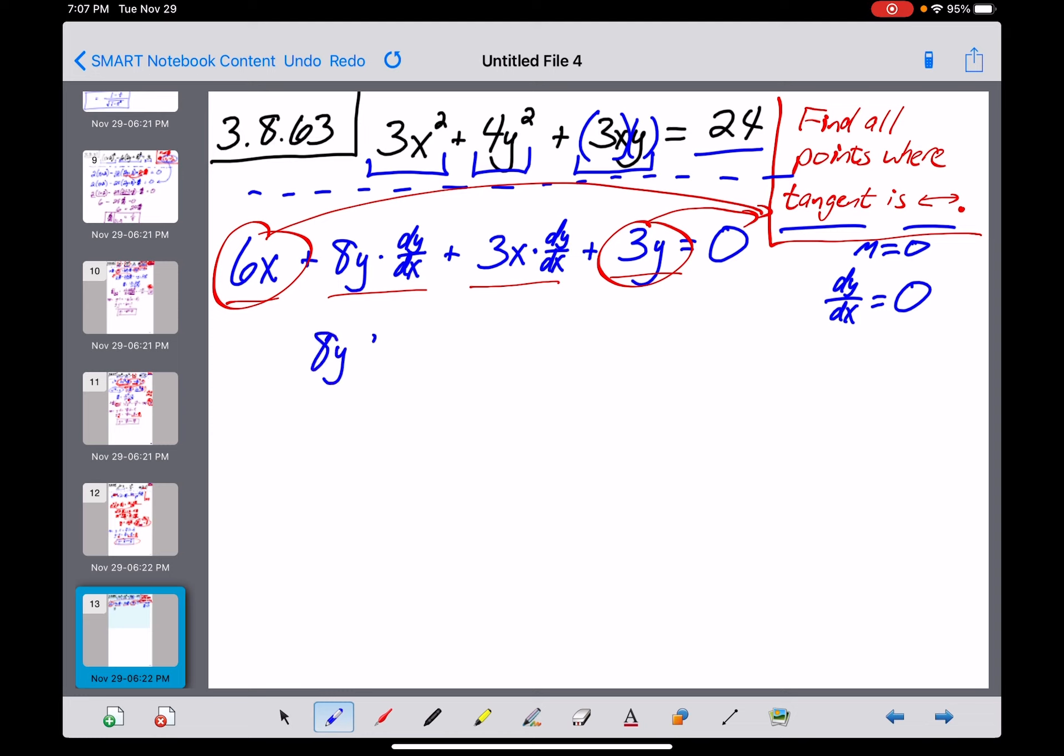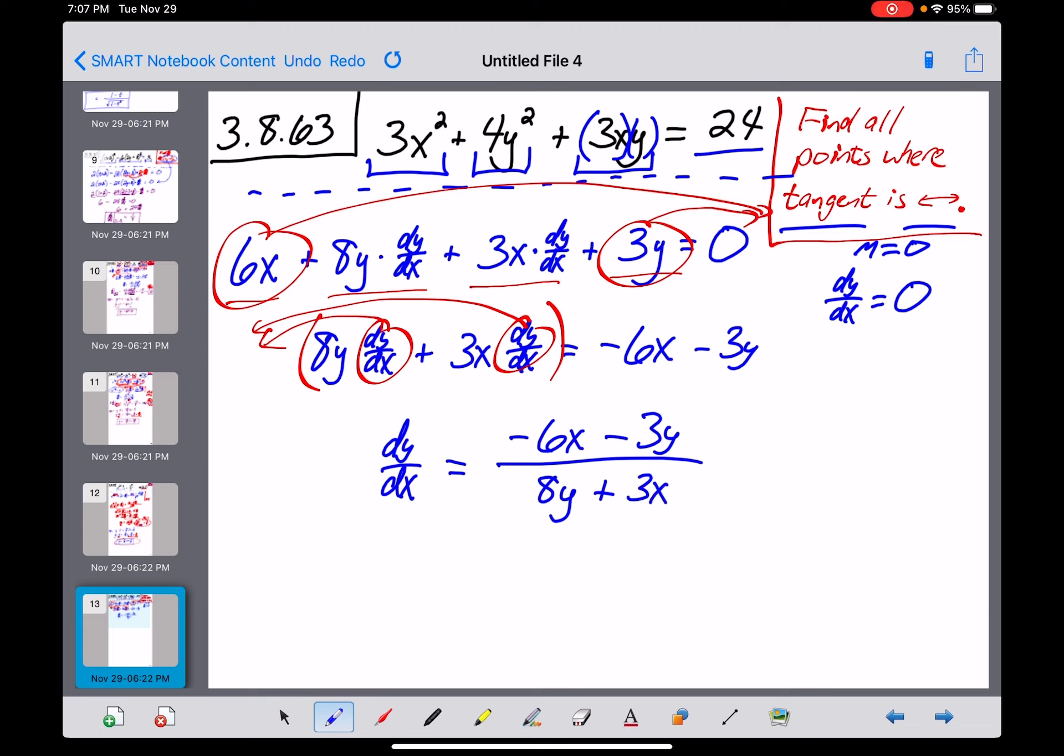So 8y dy dx plus 3x dy dx equals negative 6x minus 3y. Then I'm going to factor out the dy dx's, bring those all the way out in front, and then divide by what's left over. So dy dx will equal negative 6x minus 3y all over 8y plus 3x. And that is what we have for our derivative.